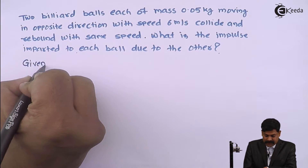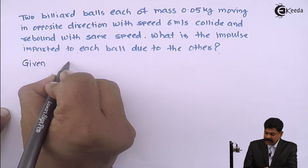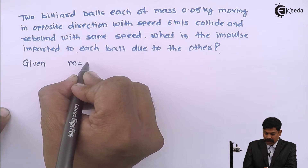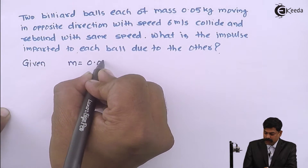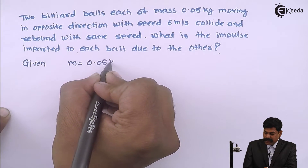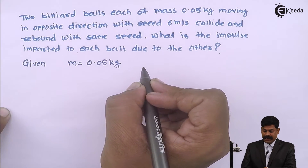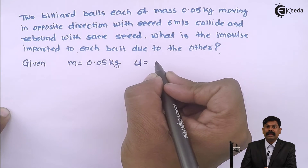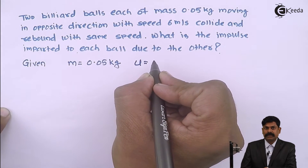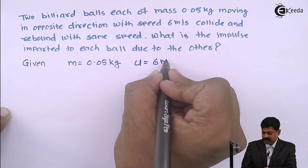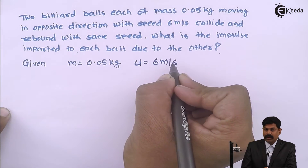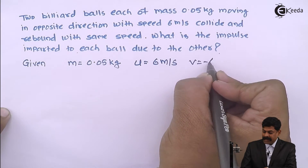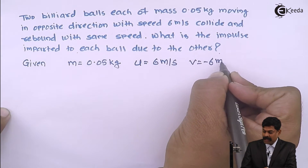Given: mass of each billiard ball is 0.05 kg. Initial velocity is 6 meter per second. Final velocity is minus 6 meter per second. To find: impulse, that is F into t.